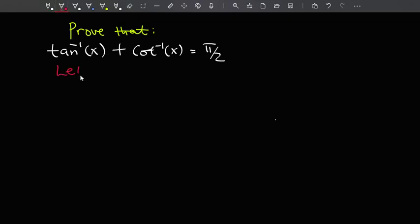So the way I'm going to start this is, I'm going to let the arctan of x to be some angle, let's say theta. Of course, this implies that x is the tan of theta.